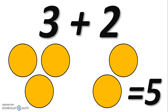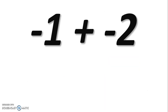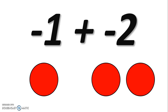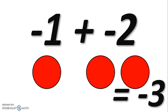Now we're going to build another math problem, this time with negative numbers. Use your counter chips to model negative one plus negative two. You should have one red counter chip and two more, which combine to give you negative three.